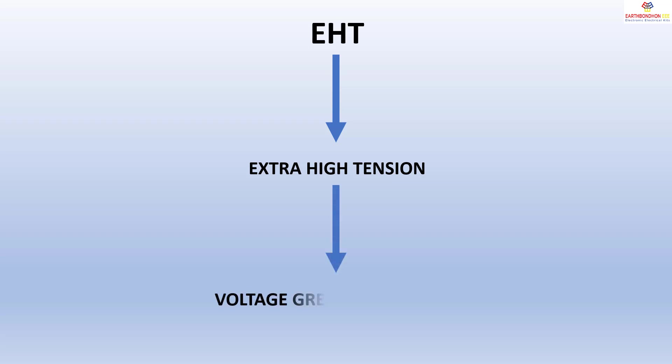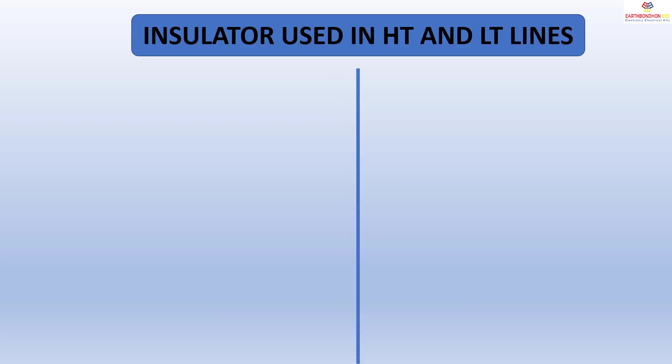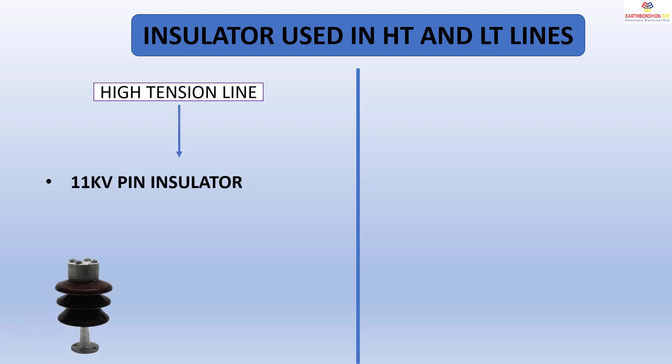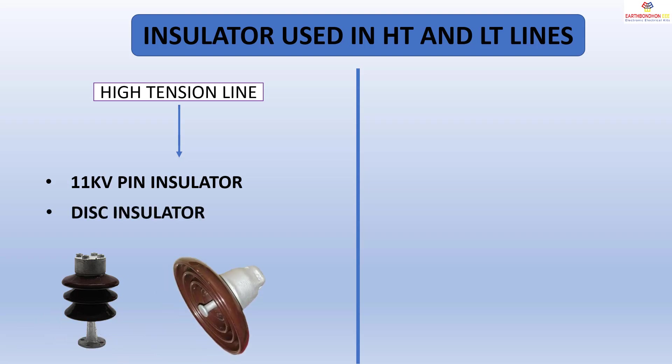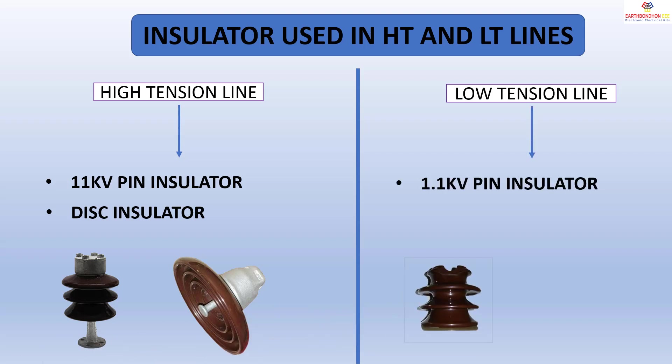Insulators used in HT and LT lines: High tension line 11 kV uses pin insulators and GS insulators. Low tension line 1.1 kV uses pin insulators.